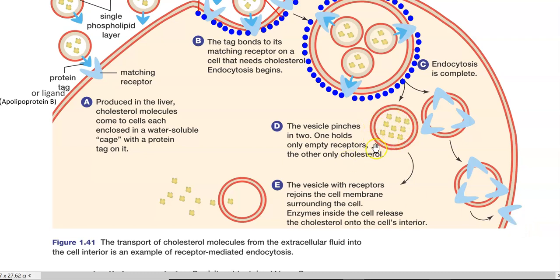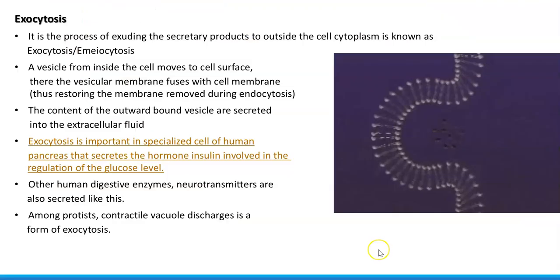What happens to the cholesterol-containing endocytosis cage? It will be degraded by the enzymes present inside the cell. As a result, the cholesterol molecule is released in the interior part of the cell. This cholesterol molecule will bind to the membrane and help in maintaining the proper fluidity of the cell membranes. The whole process is referred to as receptor-mediated endocytosis, which commonly happens in any kind of cell, mainly to take up the cholesterol molecule required by it.